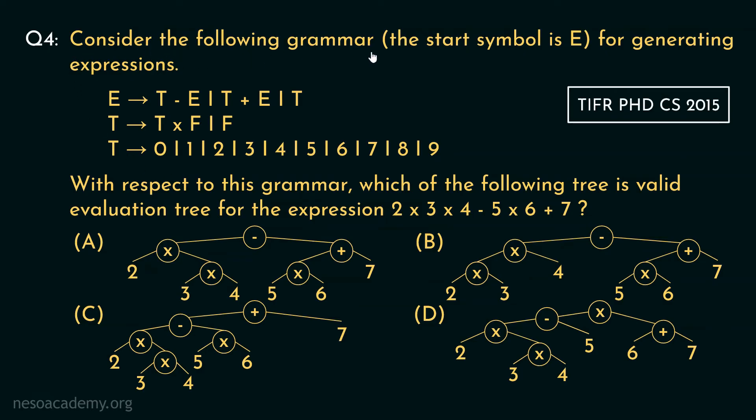Consider the following grammar. The start symbol is E. Well here the start symbol is explicitly mentioned for generating expressions. So these are the production rules of the grammar. With respect to this grammar, which of the following tree is valid evaluation tree for the expression 2 into 3 into 4 minus 5 into 6 plus 7? Basically examining this grammar we will have to determine the correct parse tree for this expression.